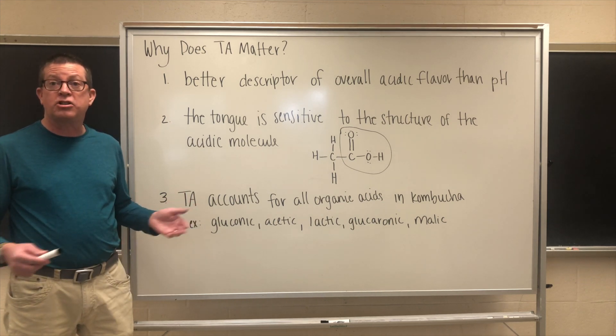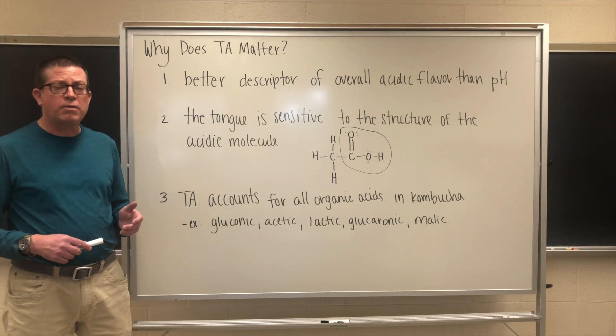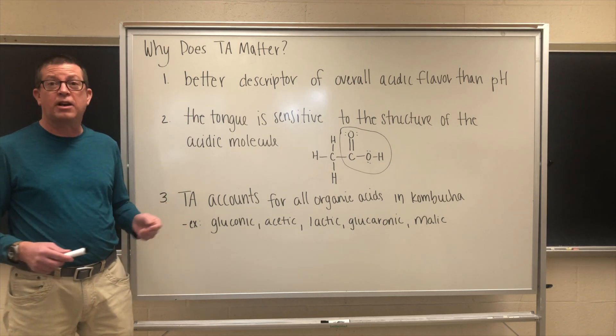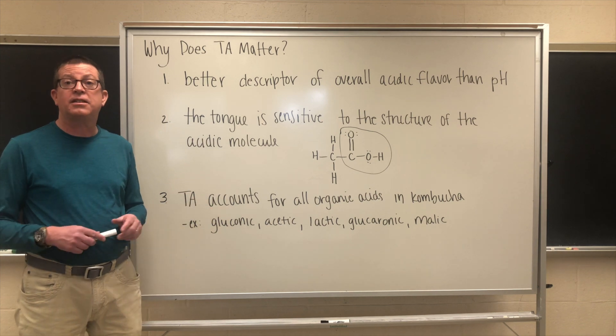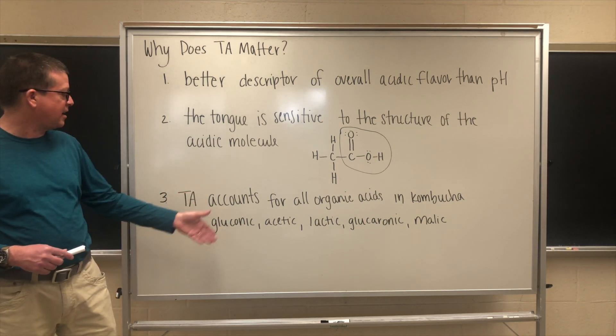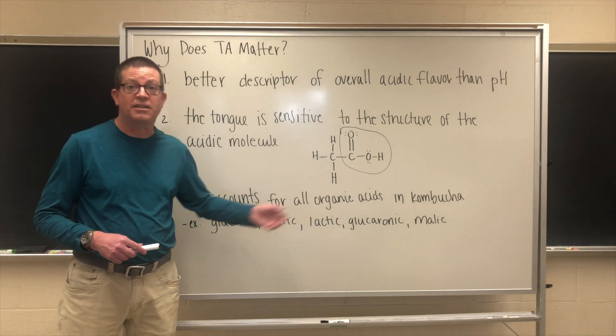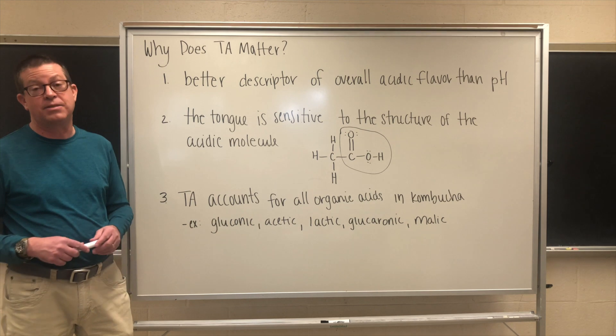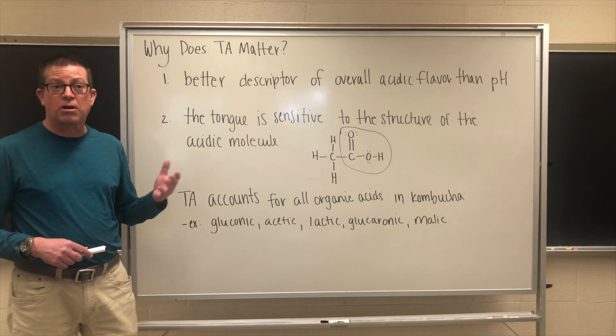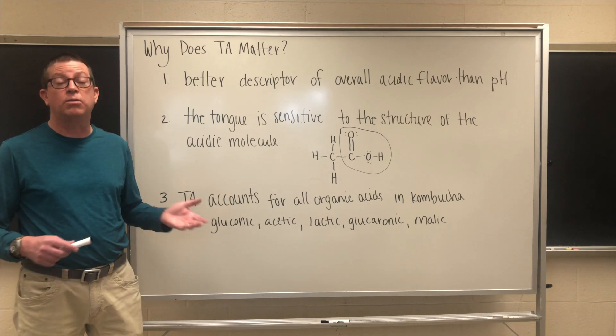The other advantage to TA is that it accounts for all of the different organic acids in the kombucha. When we do a titration like I just showed you, when we get to that equivalence point, we've essentially neutralized all the different acids that we find in kombucha. Those can be acids such as gluconic acid, acetic acid, lactic acid, glucuronic acid, valic acid, and any number of other ones. That's why we call it titratable acidity. It really can also be thought of as total acidity.